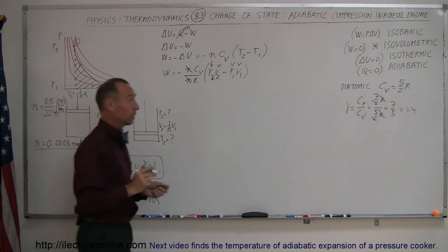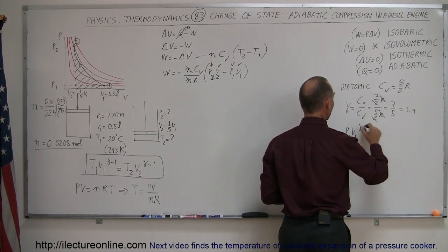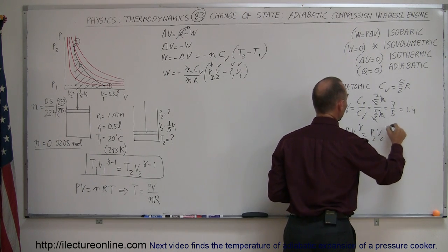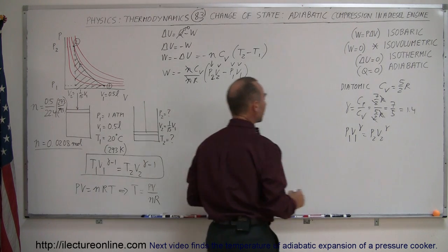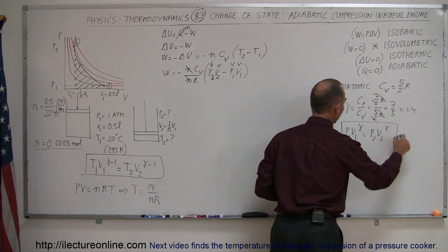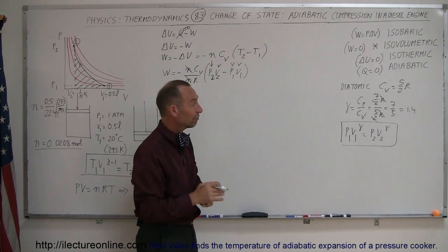So how do we find that? To find that we use the following equation: P1V1^gamma equals P2V2^gamma. Just like this equation where we relate temperature and volume, we have this equation for adiabatic processes that compares pressure and volume.